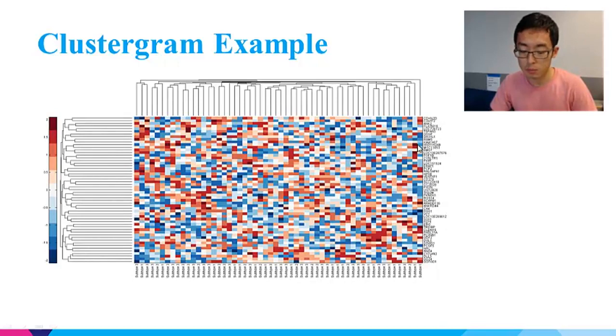Here is an example of a simulated clustergram with random numbers. In this clustergram, no distinct clusters can be observed. Red and blue colors are just mixed all together. And the column labels of three subtypes are also expectedly mixed. You cannot find order in it.